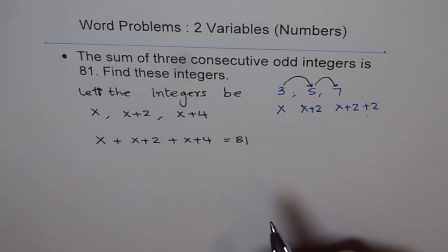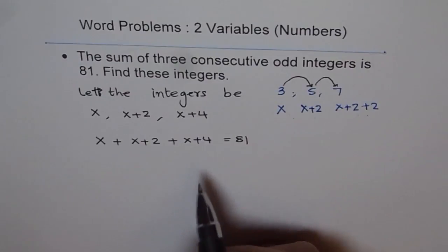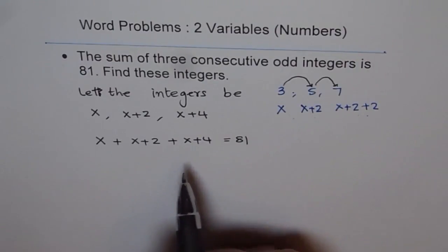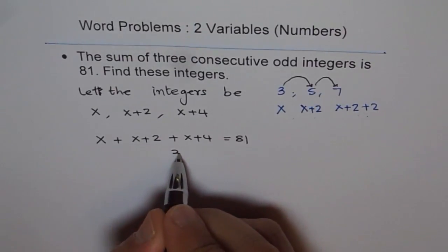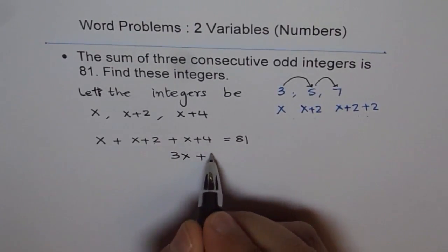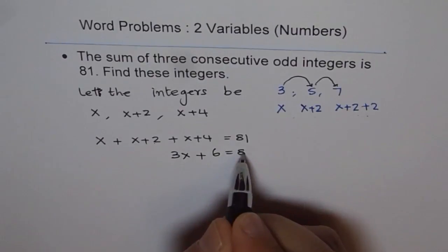So we got our equation. Since there is only one variable, effectively it is x - one equation is enough to solve. How many x's do we have in this equation? 1, 2, 3. So we can write 3x + 2 + 4 - that's 6 - equals 81.